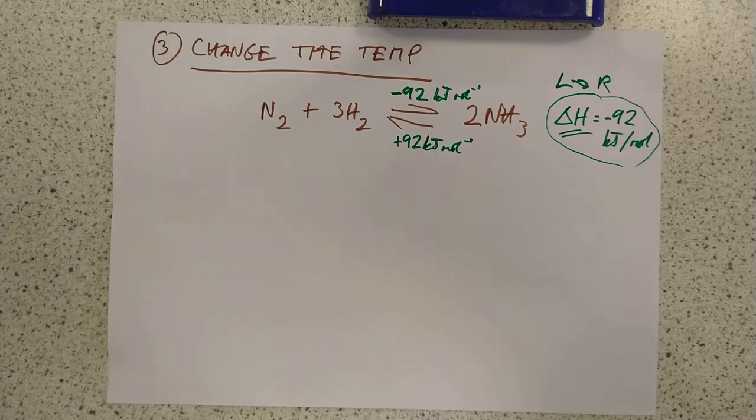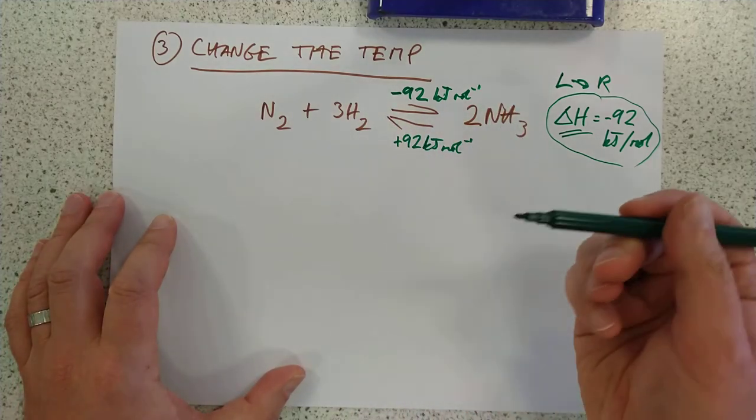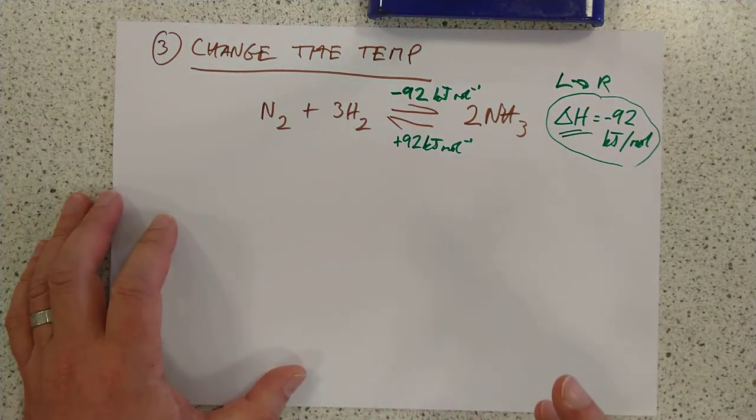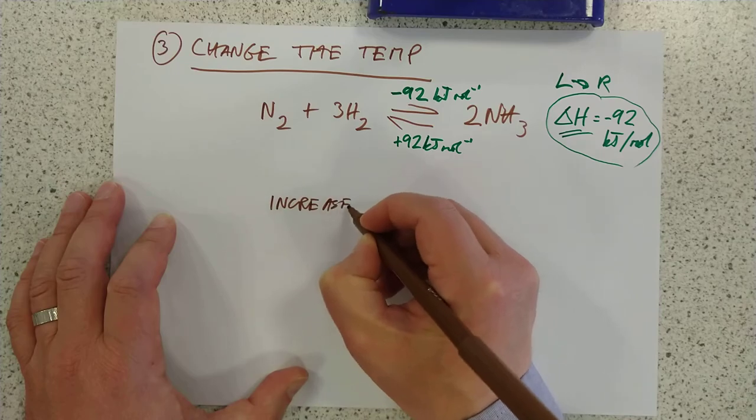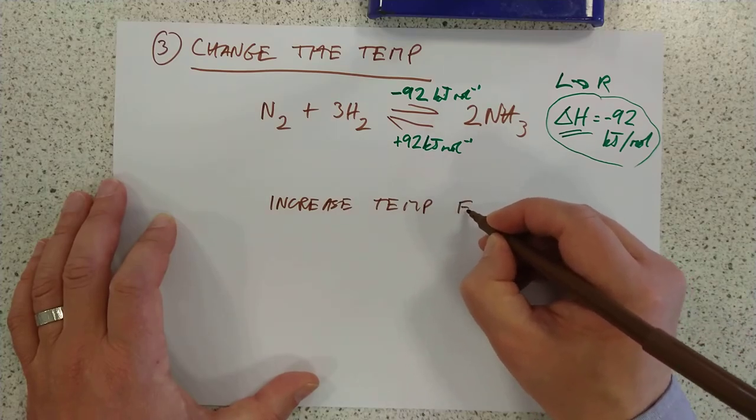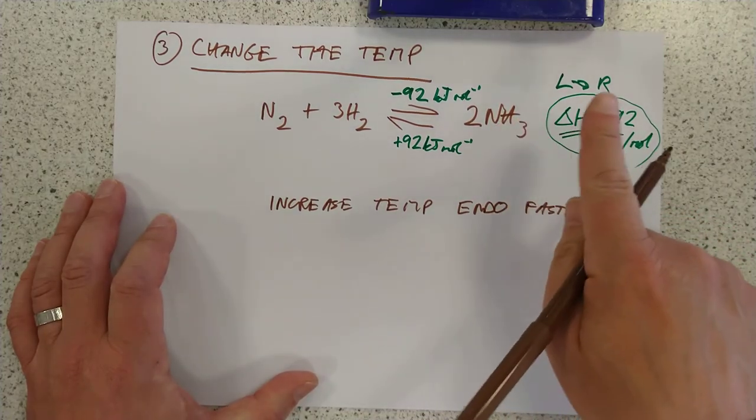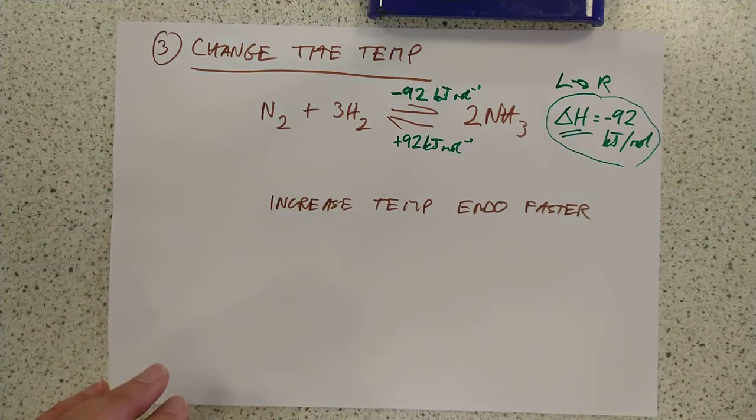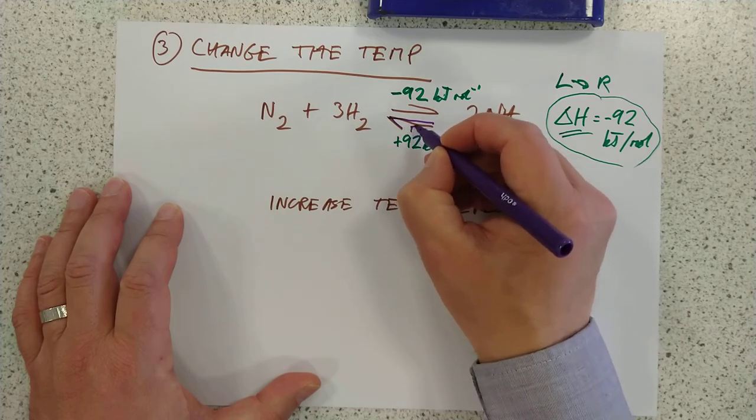This reaction from left to right is trying to give out energy, heat energy, and this reaction from right to left is taking in heat energy. So, I'm hoping you could work out that if you increase the temperature, you are going to accelerate the endothermic reaction. So the endo moves faster. And if you don't know your endo from your exo, I'll try and put a link up here somewhere to my enthalpy change videos. Go and learn the stuff. In this case, this is the endothermic reaction, so this one will become faster.